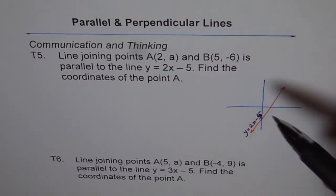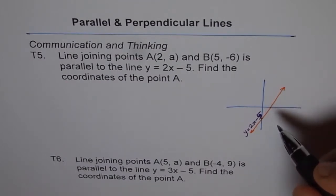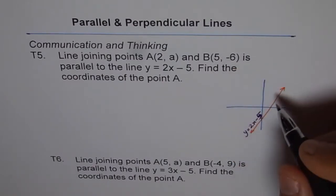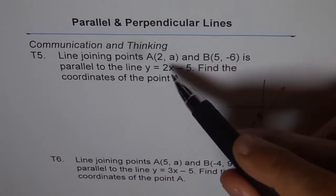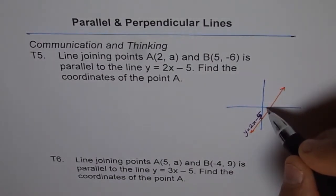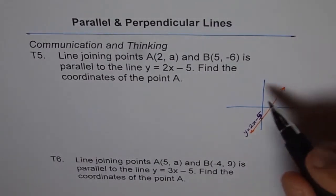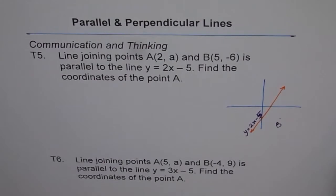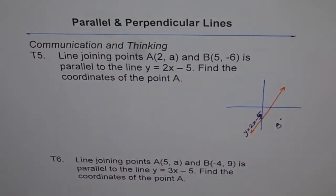Now we have point B which is (5, -6), so let's say that point is somewhere here. And we have point A which is (2, a) — we don't know the value of a. We only know point B.